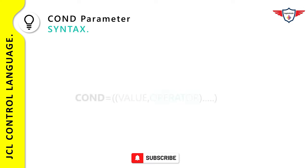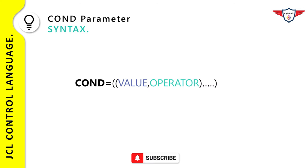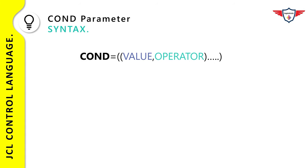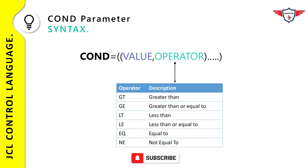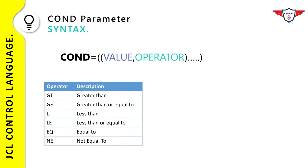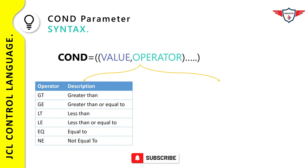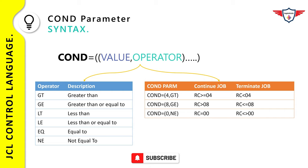Now let's talk about the syntax of the conditional parameter. The syntax is fairly simple: you have the COND keyword followed by an equal sign, then two subparameters — value and operator. The possible values for the operator field are: greater than, greater than or equal to, less than, less than or equal to, equal to, and not equal to. The value subparameter is used to specify a numeric return code value, such as 4, 8, 12, or 16, depending on your requirement.